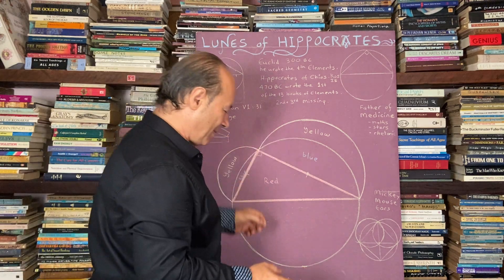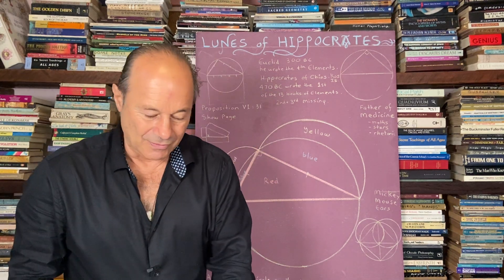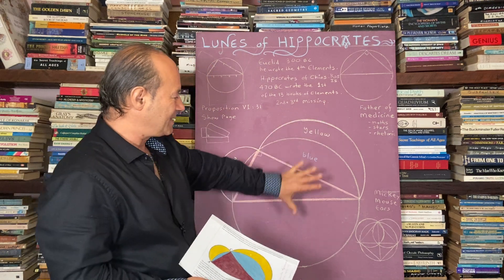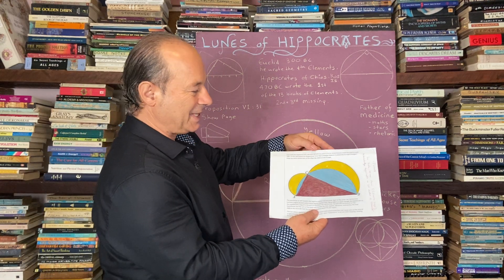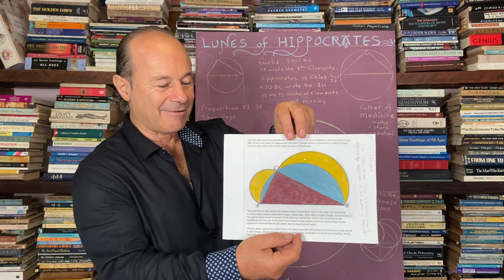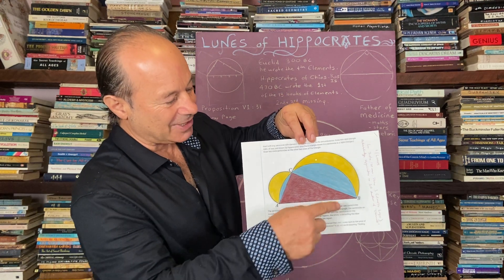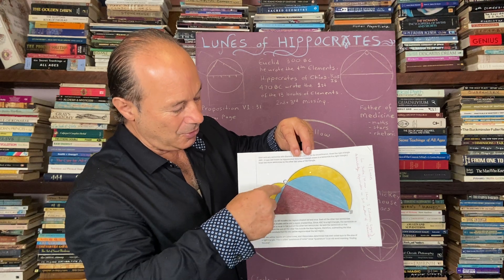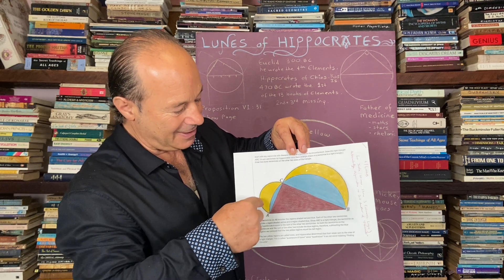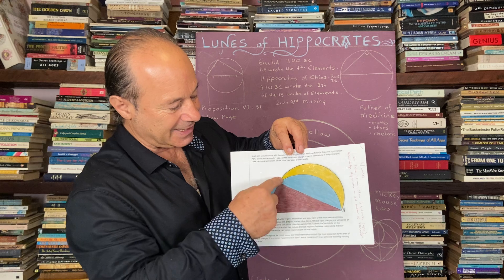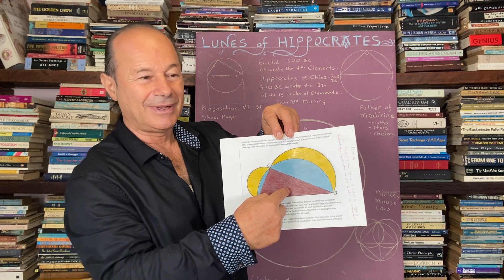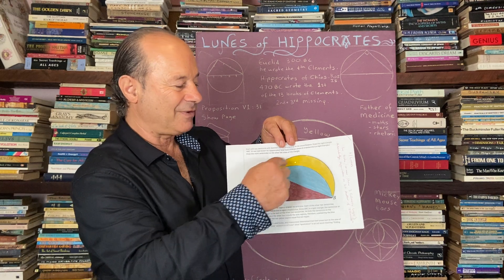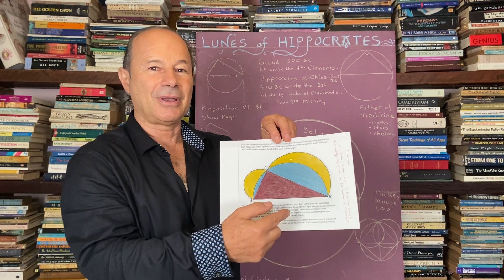Today's lesson is we're going to look at the Lunes of Hippocrates. Just so you know what's coming up in the next 10 minutes — here's a diagram — we're basically going to show that the curvature of these two lunes, or moon shapes, the area of that plus that is equivalent to the red triangle. And that's a very difficult concept because how can curvature relate to straight-line polygons?